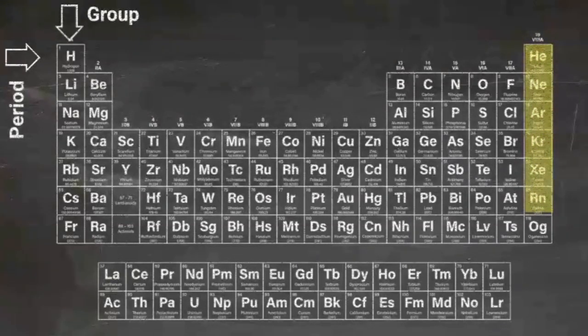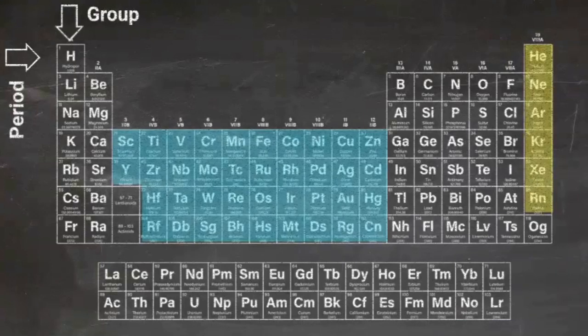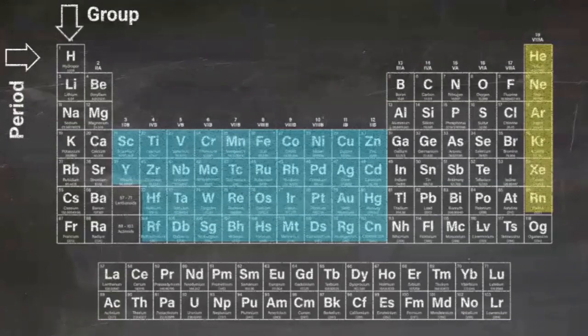Multiple groups can be formed into blocks. For example, the elements in D block are known as transition metals. Sitting below the main table are the lanthanides and actinides. They are separate because of their electron configuration, and if you want to understand what that means you're going beyond the scope of this video.